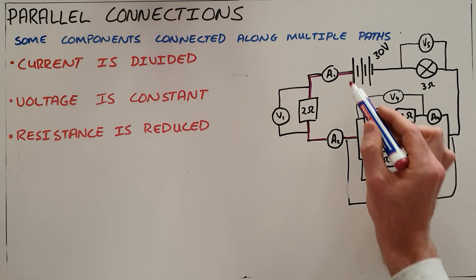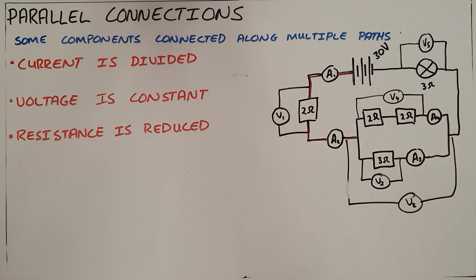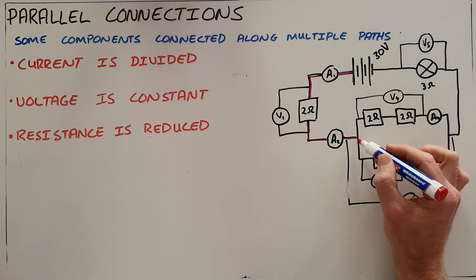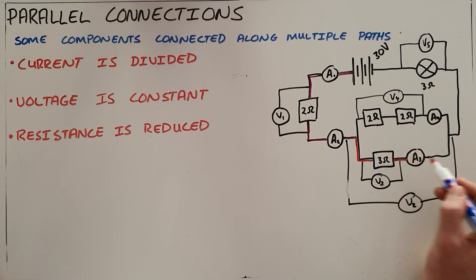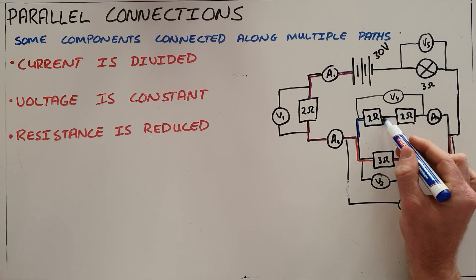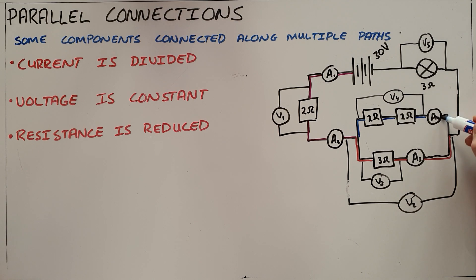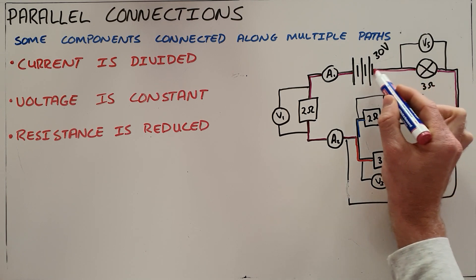Until this point, the current has not had a choice about the path it follows. But at the parallel connection, the current can either follow the path through the 3 ohm resistor and then ammeter A3, or it can follow the path through the 2 ohm resistor, then another 2 ohm resistor, then ammeter A4. After that, the current rejoins and follows a fixed path through the 3 ohm resistor back to the battery.